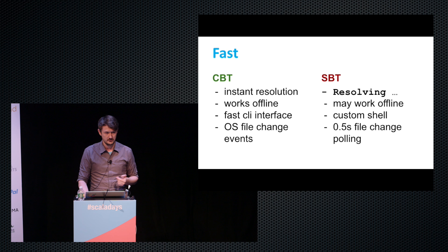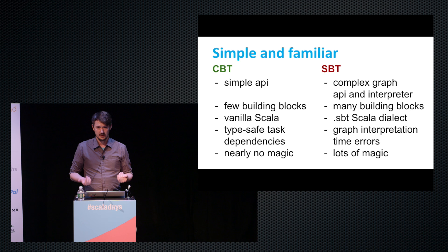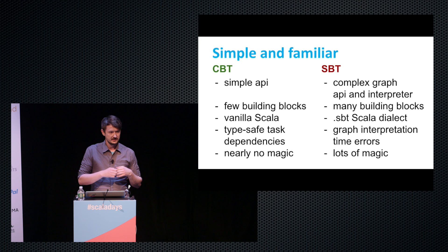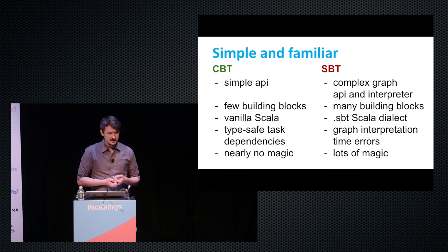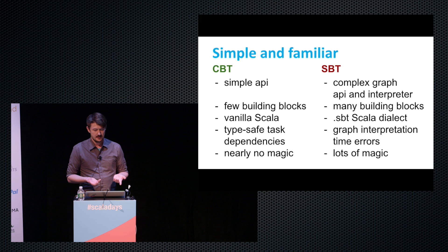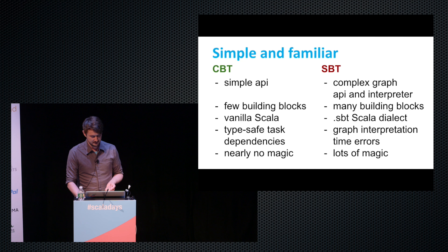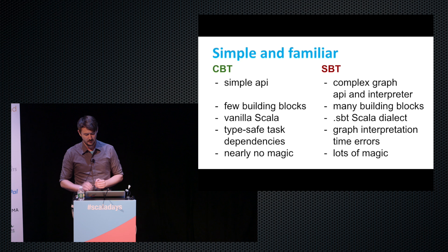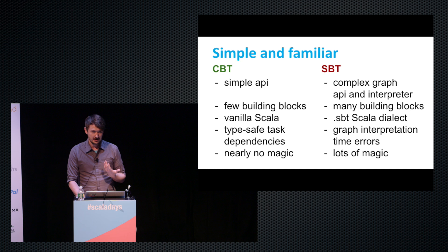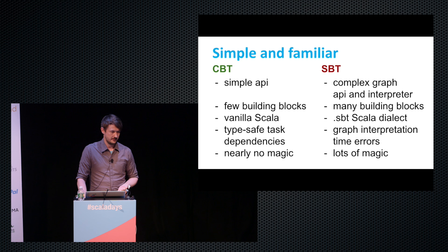CBT tries to be simple and familiar by providing a very simple API that feels natural to a lot of people. It's based on classes, methods, and overrides. While SBT builds a dependency graph which is quite complex and has a lot of operations to modify and then interpret, CBT gets away with fewer building blocks. Build scripts in CBT are written in vanilla Scala code. SBT, on the other hand, uses a Scala dialect where the rules are slightly different — despite typing fewer characters sometimes, I still find it less helpful because I have to remember different rules. In CBT, it's just Scala and it works like it always does. Things are type-safe, whereas in SBT you can get errors like 'this task doesn't exist in this scope,' which can be harder to debug. CBT tries to get away with almost no magic.